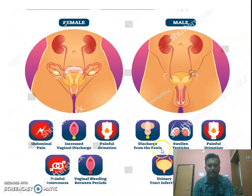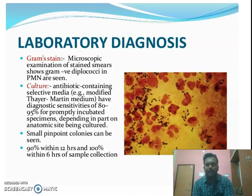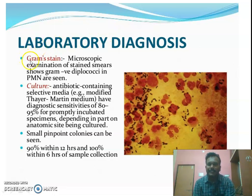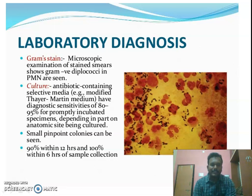In males we observe discharge from the penis, swollen testicles, painful urination, urinary tract infection, and inflammation of the penis. Coming to laboratory diagnosis, Neisseria gonorrhoeae — a gram-negative diplococci bacteria — can be identified by Gram staining, and can also be diagnosed by microbial culture techniques. This covers the etiology, pathogenesis, clinical features, and diagnosis of gonorrhea.